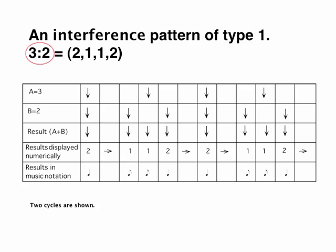The number pattern on the fourth row could easily be turned into music notation simply by assigning the number one to your chosen music symbol.